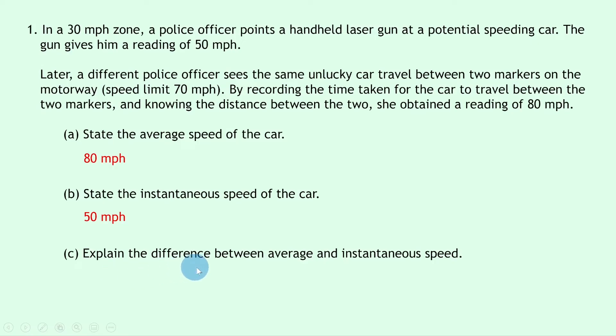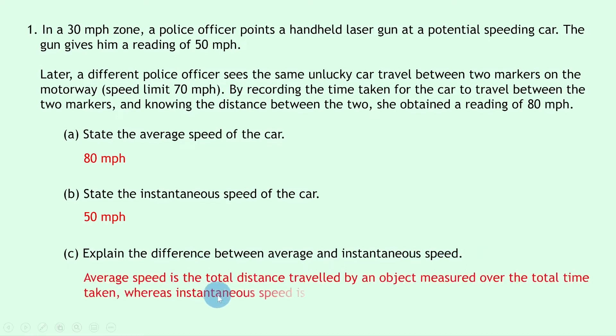And lastly Part C says to explain the difference between average and instantaneous speed. We just need to know the two definitions in order to say how they're different. Average speed is the total distance travelled by an object measured over the total time taken, whereas instantaneous speed is the speed of an object at a particular moment in time. Remember average speed is the average over a whole journey, whereas the instantaneous speed of an object will change throughout the object's journey.